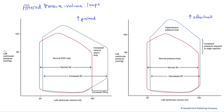And to do so, we're going to graph left ventricular pressure versus left ventricular volume. We have a normal loop here shown in red on both sides.